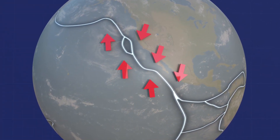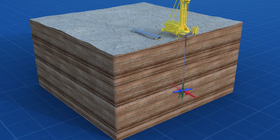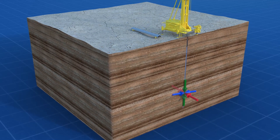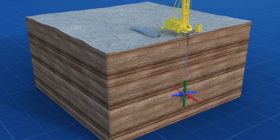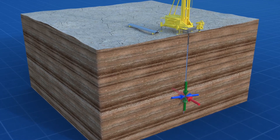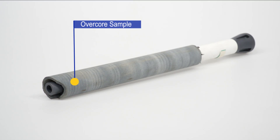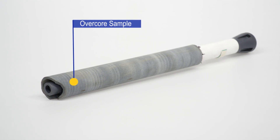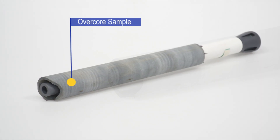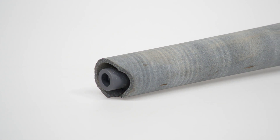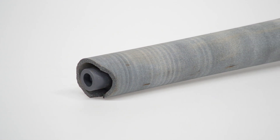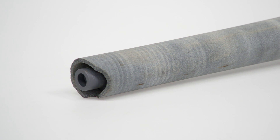While we can't measure stress directly, we can determine the stress in three dimensions by measuring displacements or strains in an elastic material such as rock. Through a process of removing the in situ stress to zero, called overcoring, and by independently measuring the material properties of the rock, the full three-dimensional in situ stress field can be determined.